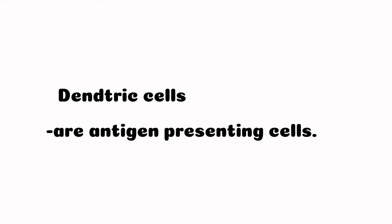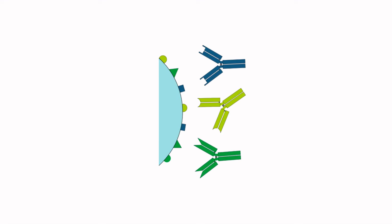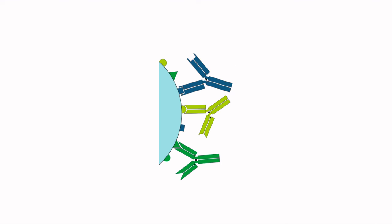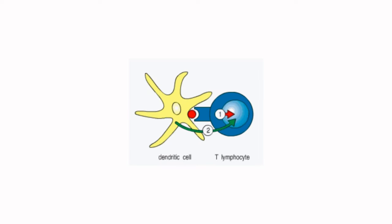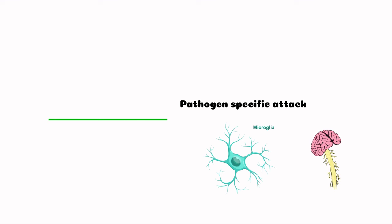Dendritic cells are antigen-presenting cells (APCs) that initiate the adaptive immune response. Antigens are molecules present on the surface of pathogens that help them attach to and attack human cells. Antibodies are molecules complementary to the shape of antigens, so they bind to antigens and prevent pathogens from attacking human cells. Dendritic cells present these antigens on their surface to help T cells start the third line of defense, which is a pathogen-specific attack. Along the same lines, microglial cells are resident immune cells of the brain and spinal cord responsible for the elimination of microbes, dead cells, redundant synapses, protein aggregates, and other particulate and soluble antigens that may endanger the central nervous system (CNS).